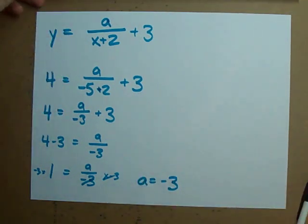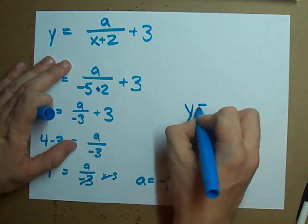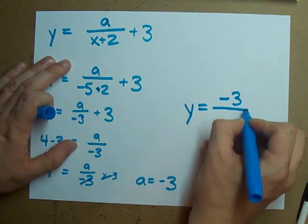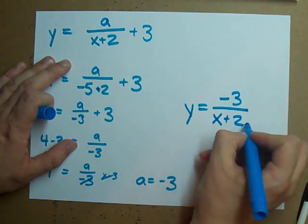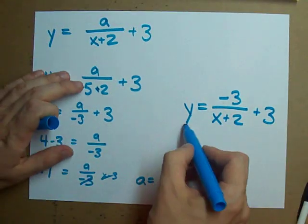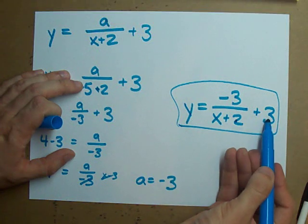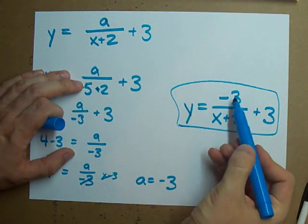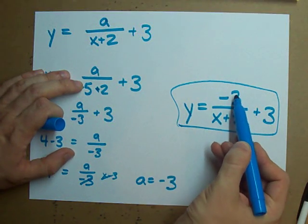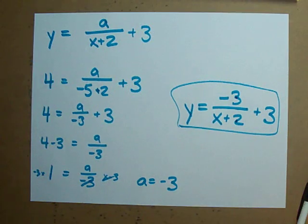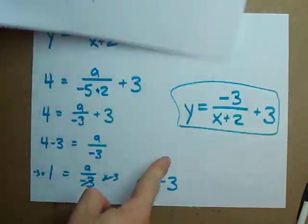Anyways, a is negative 3 and the final function here is negative 3 over x plus 2 plus 3. Done. Vertical asymptote gives that. Horizontal asymptote gives that. A point on the curve lets you solve for the numerator. Piece of cake.